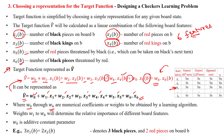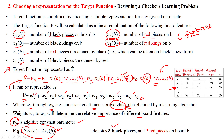Here, w0 to w6 are numerical coefficients called weights or parameters. They can be adjusted to reduce mistakes or error, determining the relative importance of different board features. W0 is the additive constant parameter. For example, if we have 3·x1(b) + 2·x2(b), this denotes three black pieces and two red pieces available on the board state. That is the representation to the learning system using the hypothesis function.